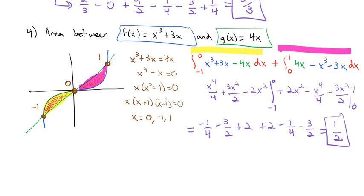That's how we split up functions to find areas of individual pieces. When the top function switches with the bottom function, we need to set up another integral. But there's actually another way to solve this problem that would have saved us quite a lot of grief.